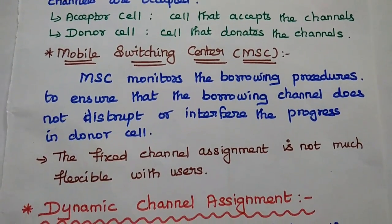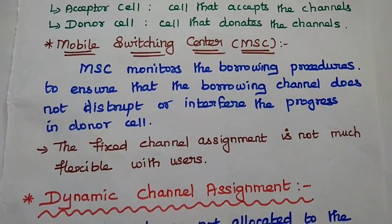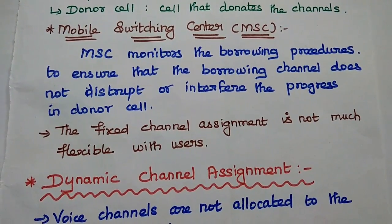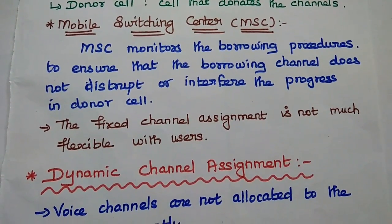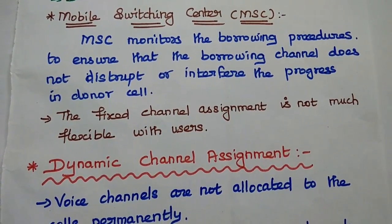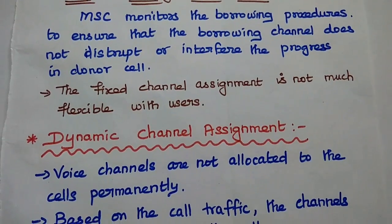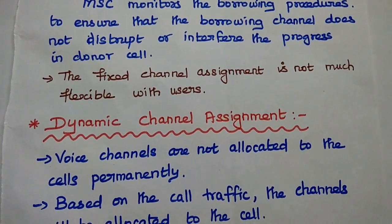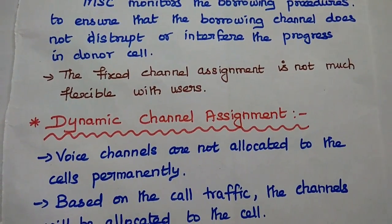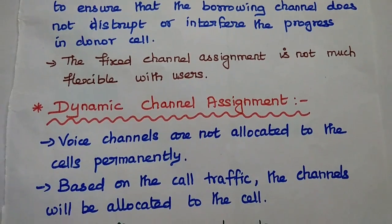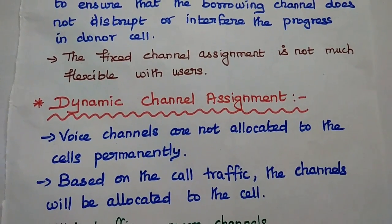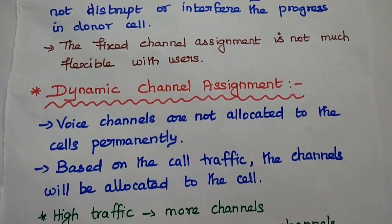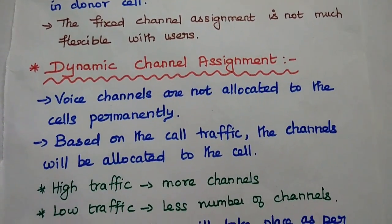The major disadvantage of fixed channel assignment is that it is not much flexible for the user, because the number of channels is fixed. If you want to increase the number of channels, you can only borrow channels from the neighboring cell. That is a major drawback in fixed channel assignment.